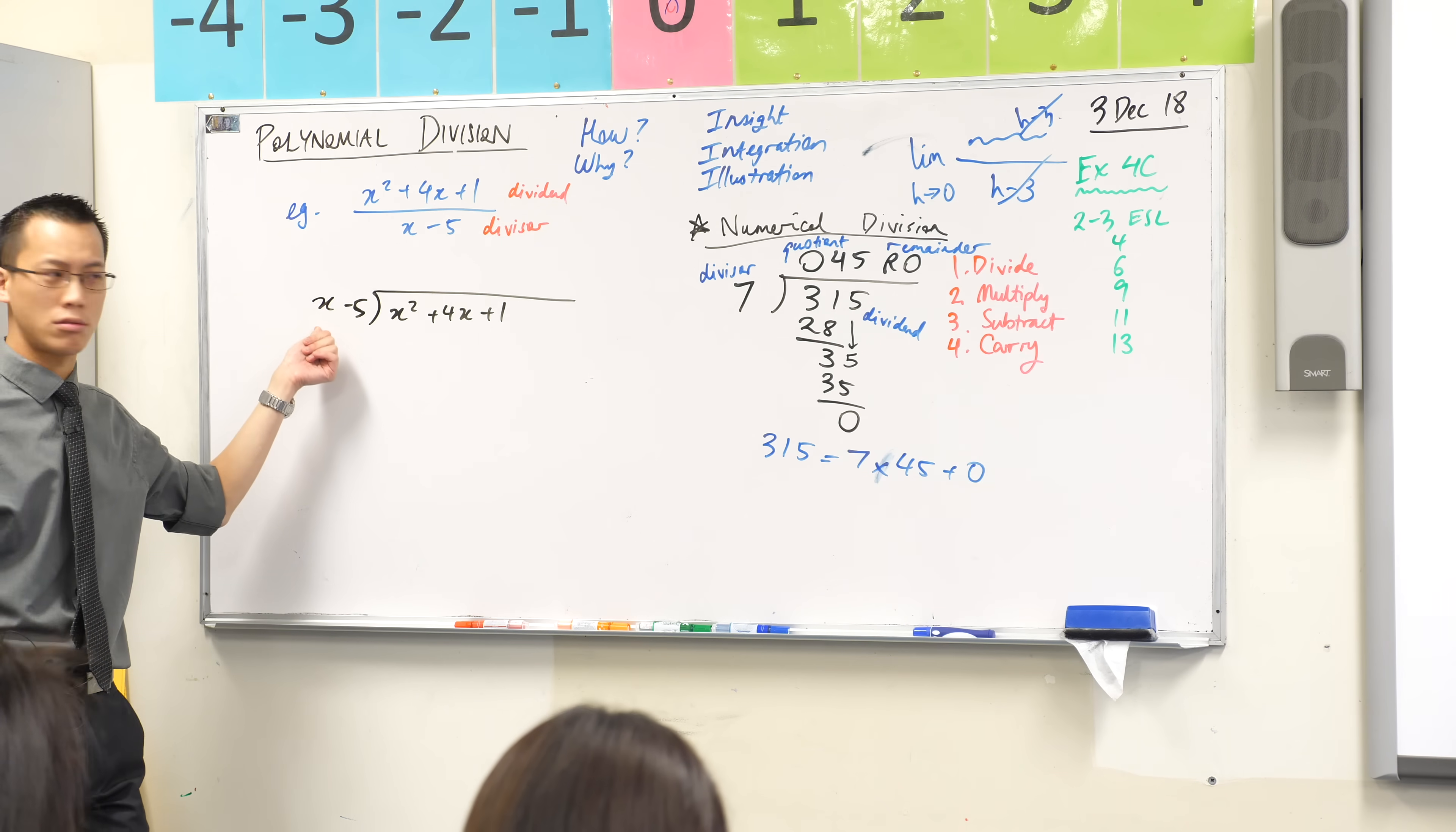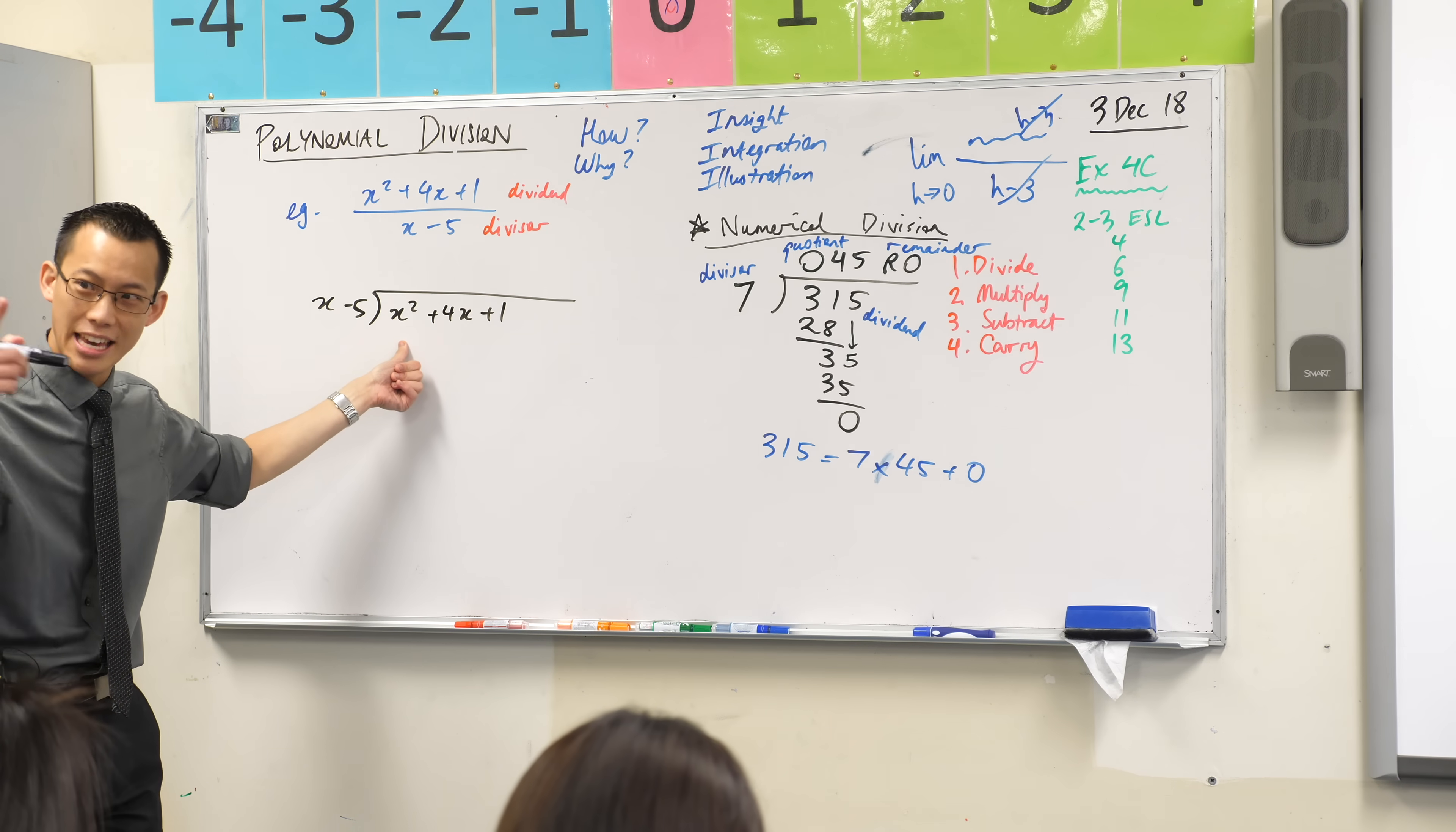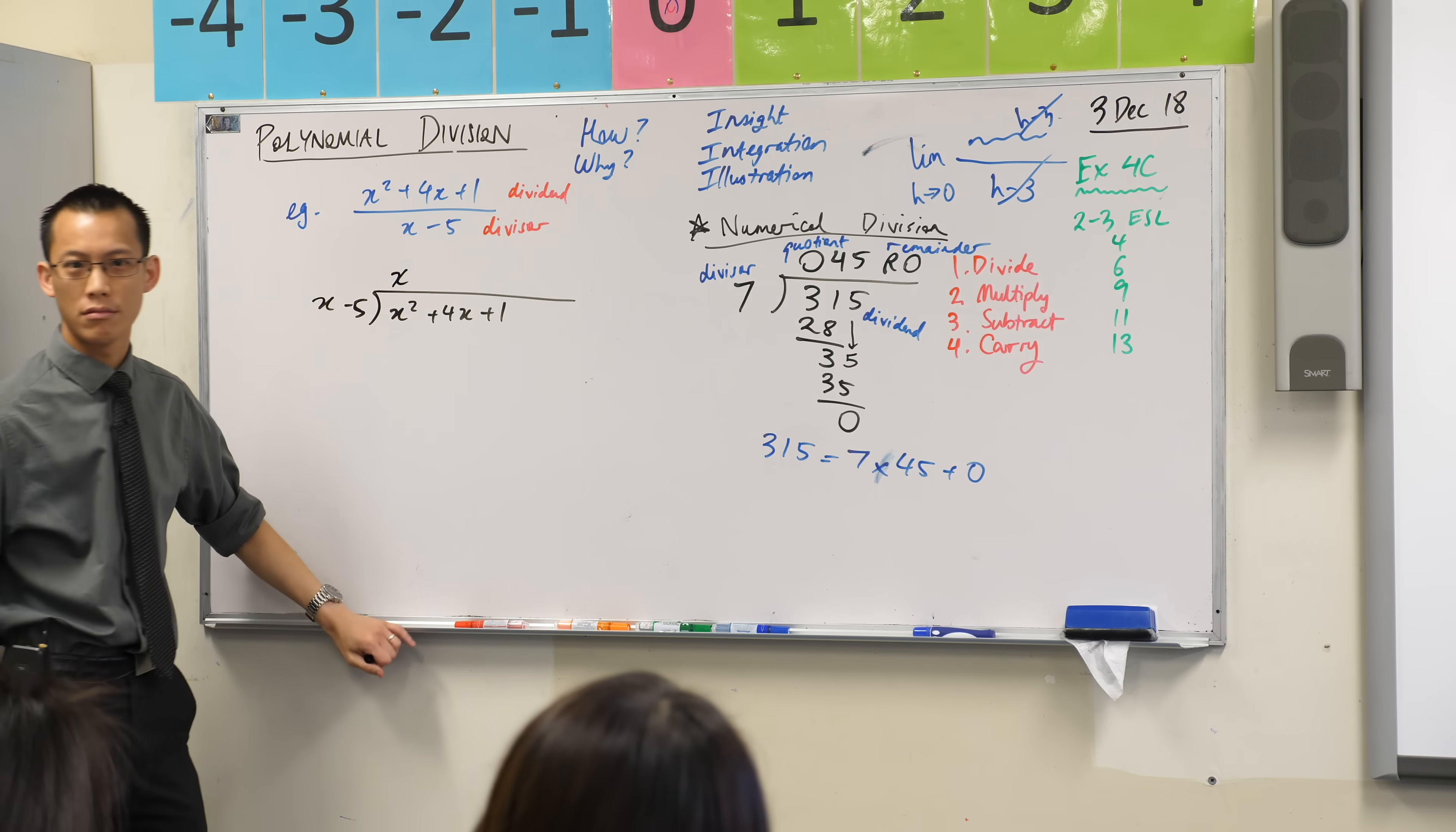What if x was say 7? That would be 7, this would be 49. So how many times would x go into x squared? That would be 7 times. In other words, it keeps changing based on what x is. x goes into x squared, x times. Does that make sense?